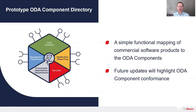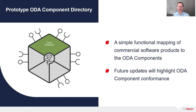The prototype version of the ODA component directory focused on a simple functional mapping of commercial products to the ODA components — in other words, just using the green part of the hexagon. On its own, this doesn't tell you anything about whether the vendors' products conform to the ODA component specifications or not, only that the functional scope of their commercial products covers the scope of the component, which is still useful.